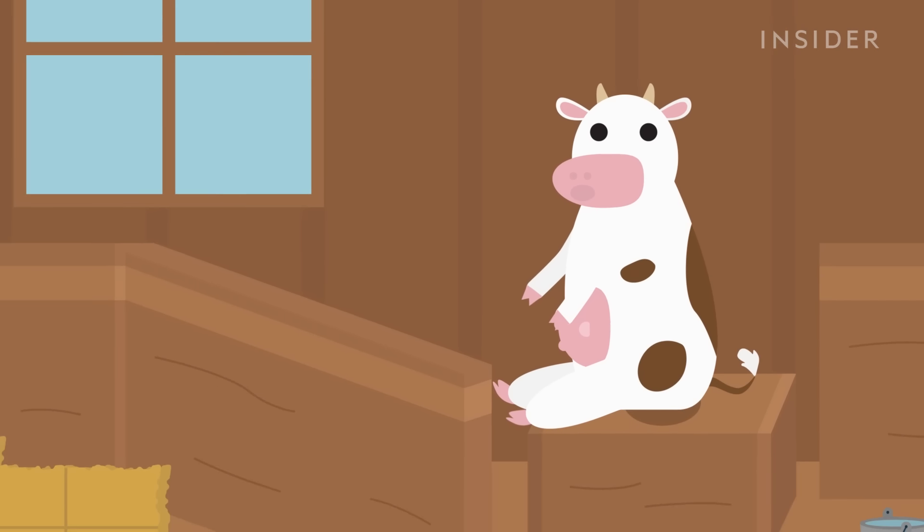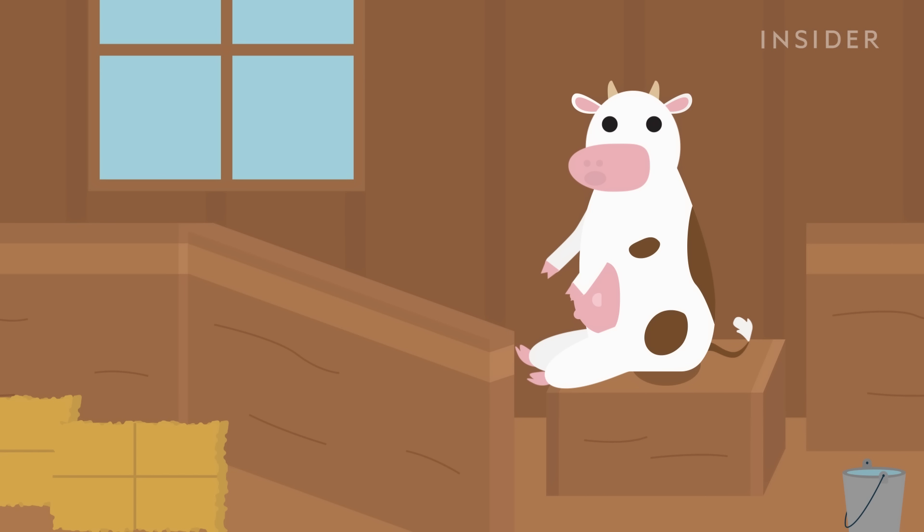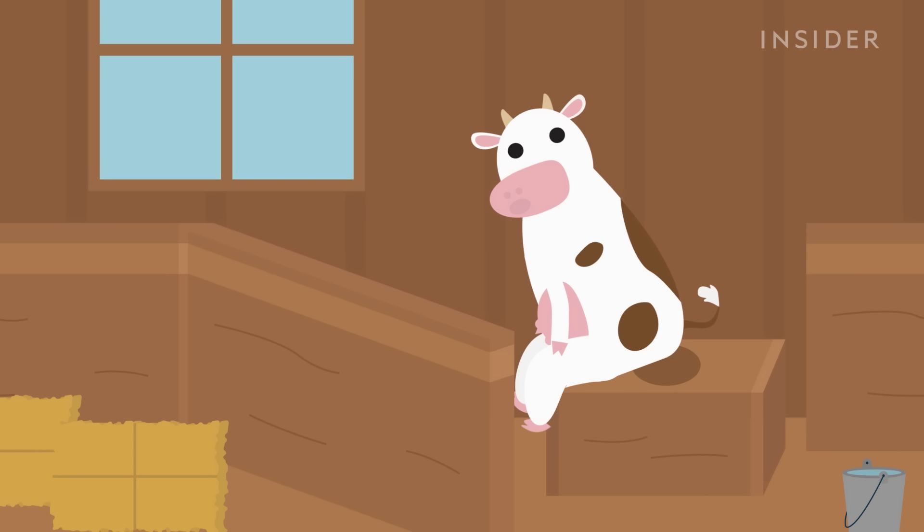Mooing like a cow, or making a similar noise if you aren't feeling particularly bovine, can help reduce straining. You'll want to lean forward with your elbows on your knees while you do it. The idea is to open up your belly and get yourself in a more efficient pooping position.